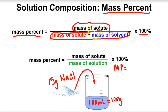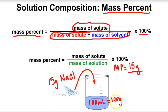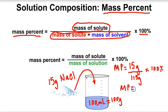To get the mass percent, we take the mass of the solute, which is 15 grams, and divide by the mass of the entire solution. The mass of the solution is not just 100 grams — that's the mass of the water. The mass of the solution is water plus salt: 100 plus 15 equals 115 grams. Then we multiply by 100%, giving us a mass percent of 13.0%.